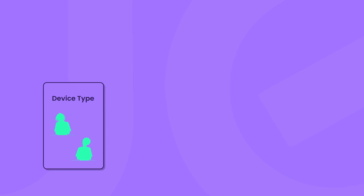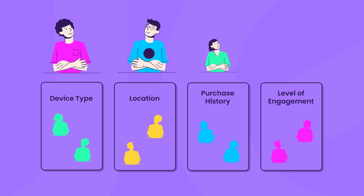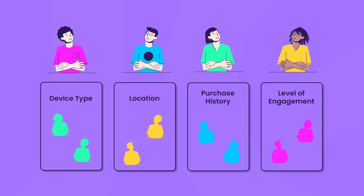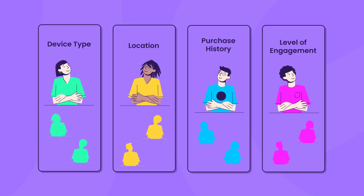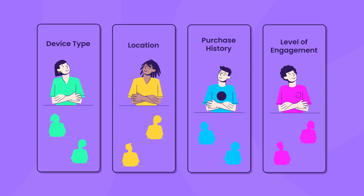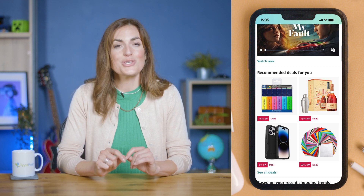To get started, you need to segment your users based on criteria like their device type, location, purchase history, or level of engagement. Then personalize your in-app messages with your user's name or location, and offer them recommendations based on their past behavior. Take Amazon — they offer product recommendations based on users' browsing and purchase history, and even have a section called 'Recommended For You' in their app, where users can easily discover relevant products.